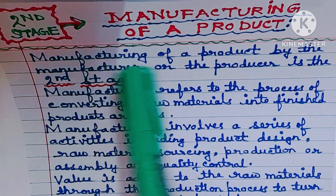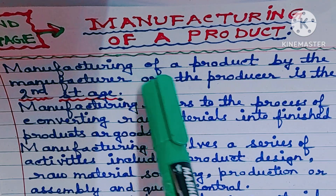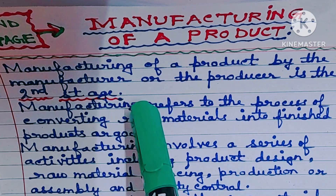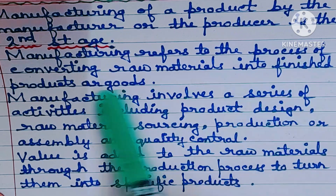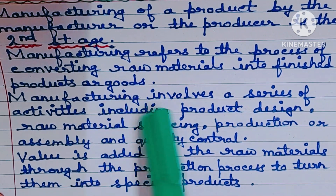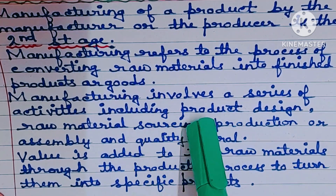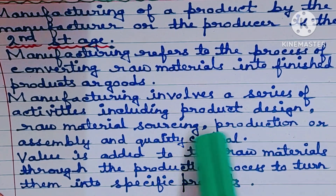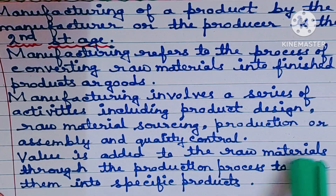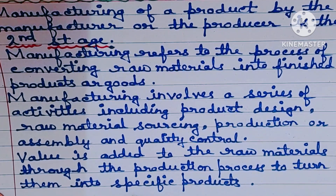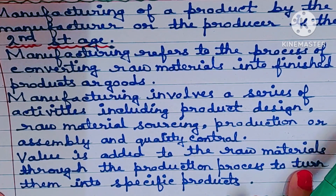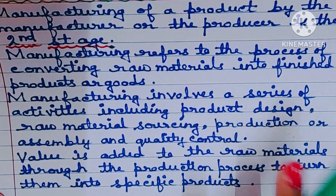Second stage: manufacturing of a product. Manufacturing of a product by the manufacturer or the producer is the second stage. Manufacturing refers to the process of converting raw materials into finished products or goods. Manufacturing involves a series of activities including product design, raw material sourcing, production or assembly, and quality control. Value is added to the raw materials through the production process to turn them into specific products.